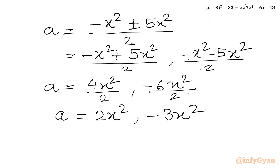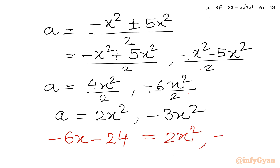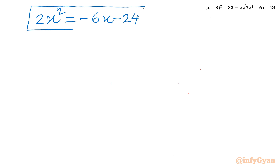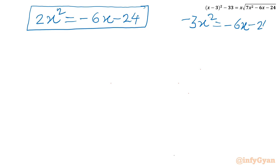Now we will put back our substitution. A was minus 6x minus 24. So substituting: minus 6x minus 24 equals 2x squared gives the first equation, and minus 6x minus 24 equals minus 3x squared gives the second equation. Let's frame these two quadratic equations and solve them one by one.